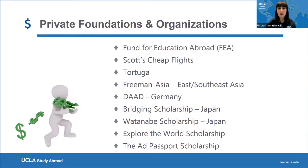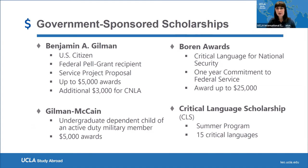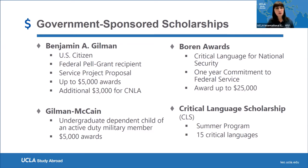The next category is government. The U.S. government has some amazing scholarships. If you are interested in the Gilman or the Gilman-McCain, there will be a presentation tomorrow at 12:30 covering that in detail. The Gilman scholarship is for U.S. citizens who are receiving Pell Grant. It has a service project proposal you complete at the end of your study abroad program, but it's a very simple project. The award is up to $5,000 — typically awards range from $3,000 to $5,000.